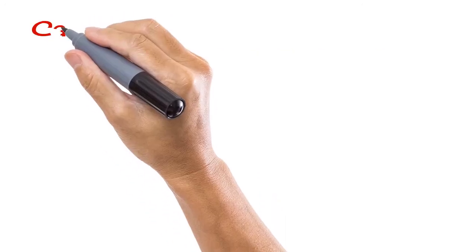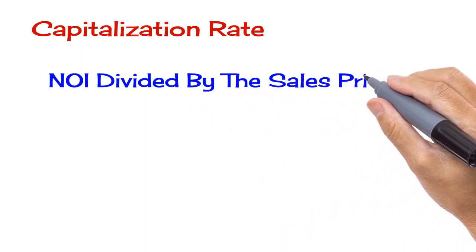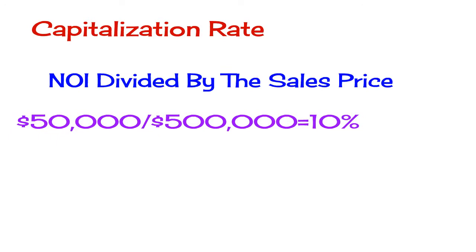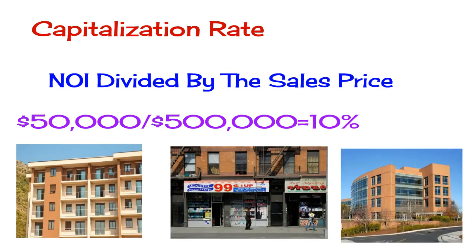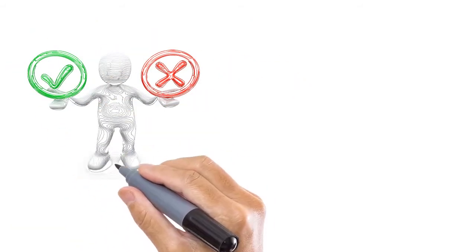Finally, another big factor is the capitalization rate. The capitalization rate is the net operating income divided by the sales price. So if the net operating income of the property is $50,000 a year and the property was purchased for $500,000, the capitalization rate would be 10%. Capitalization rates are very important because when lenders compare properties in the same neighborhood for purposes of appraising the property, they will compare capitalization rates. Although capitalization rates are not the only factor in a commercial property appraisal, it is an important one.